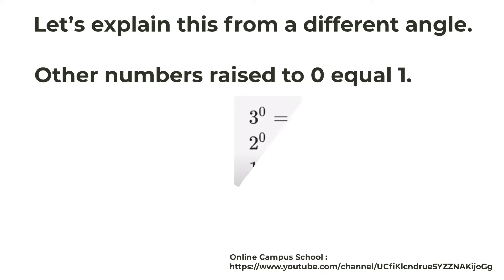So let's explain this from a different angle. Other numbers raised to zero equal one. This implies that zero raised to the power of zero equals one. So it seems like there isn't really a single correct answer, which is true.